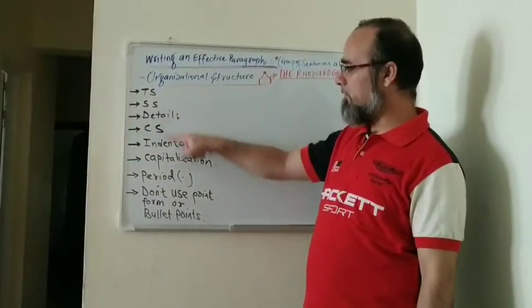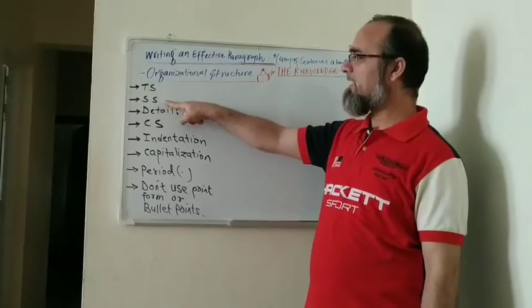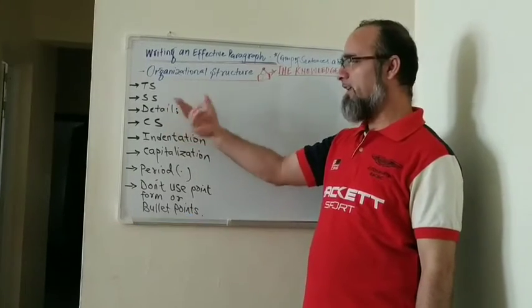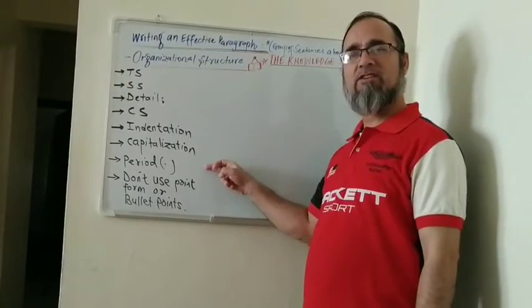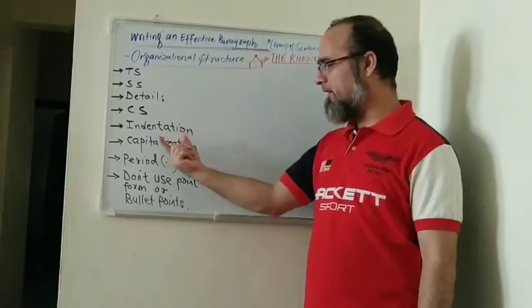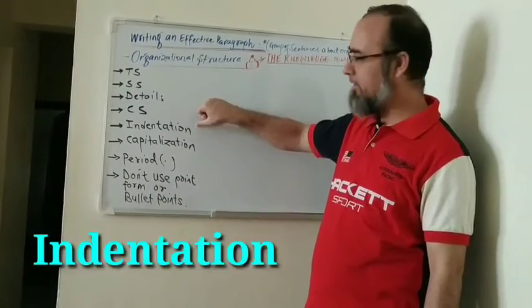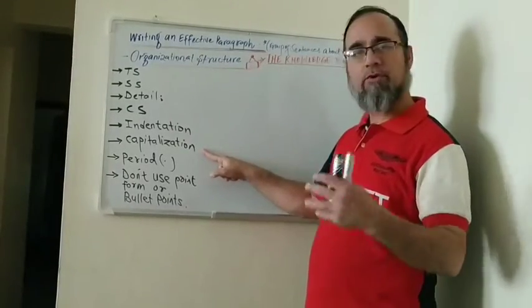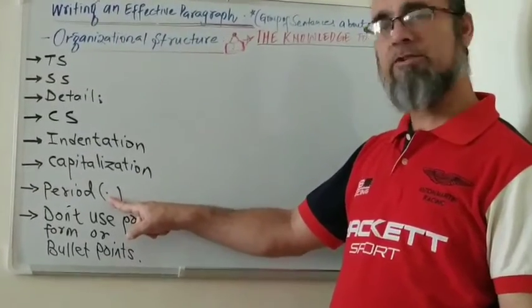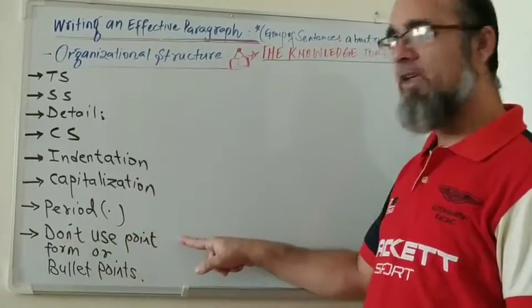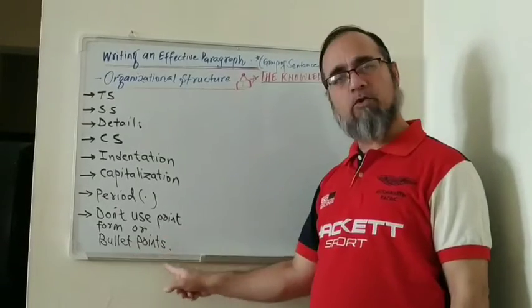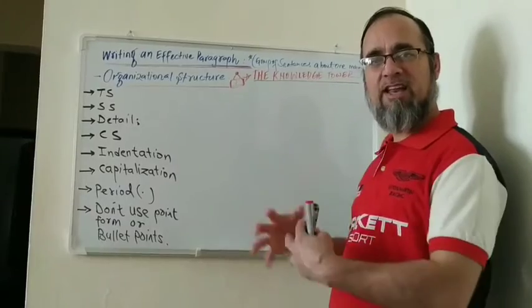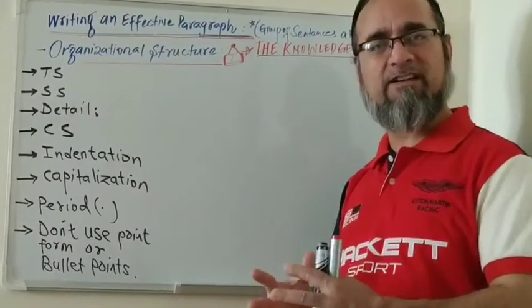Now let's talk about the organizational structure of a paragraph. When writing an effective paragraph, we need to understand these bullet points. T.S. stands for topic sentence. S.S. stands for supporting sentences, and then we have details like examples. C.S. stands for concluding sentence. Other important structural elements are indentation, capitalization, and the period — also known as a full stop. One more thing: when writing an effective paragraph, you don't use point form or bullet points. It should be a wholesome picture of interconnected sentences — topic sentence, supporting sentences, details, and concluding sentence.